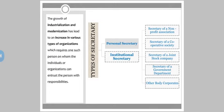As there is a growth and development of industries and a transformation in society from rural to urban, there is a need for various organizations which require a person to help them. The growth of industrialization and modernization has led to an increase in various types of organizations which require a person on whom individuals or organizations entrust and hand over their responsibilities. On the basis of this, there has been a bifurcation on the types of secretaries.